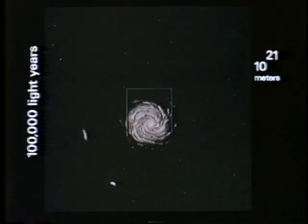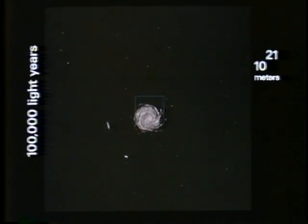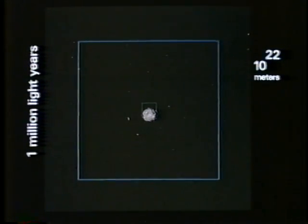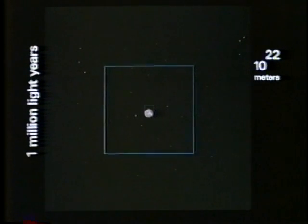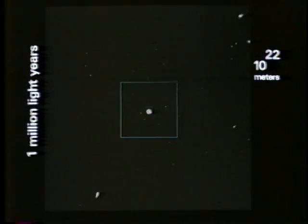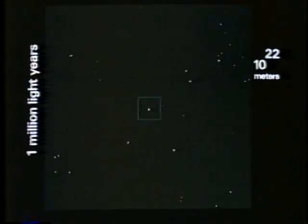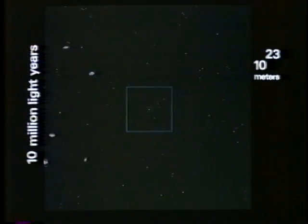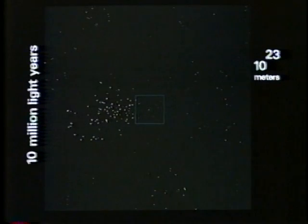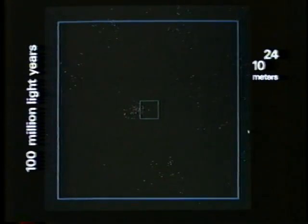The two little satellite galaxies of our own are the clouds of Magellan. 10 to the 22nd power. A million light years. Groups of galaxies bring a new level of structure to the scene. Glowing points are no longer single stars, but whole galaxies of stars seen as one. We pass the big Virgo cluster of galaxies among many others, a hundred million light years out.